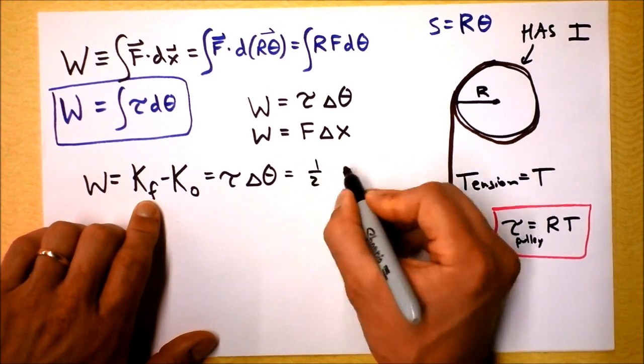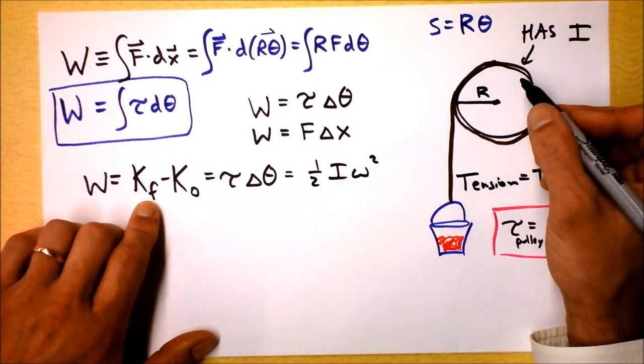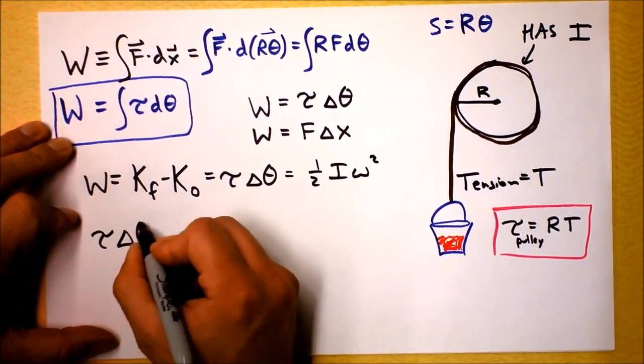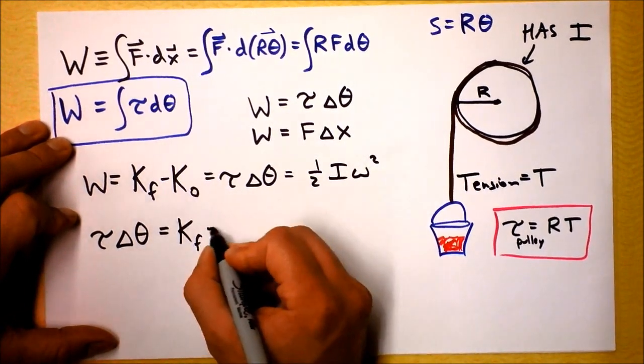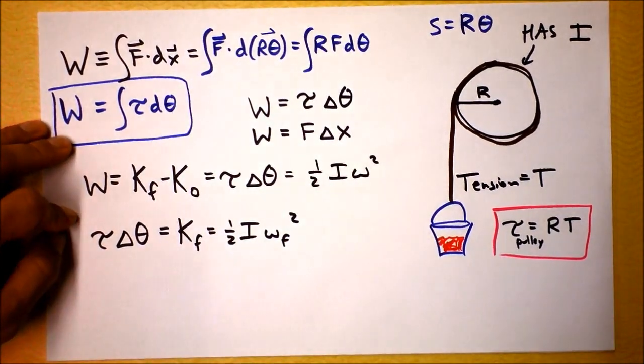If the initial kinetic energy is zero, the final kinetic energy is one-half I omega squared. That's the kinetic energy of the pulley. So we can then write that torque times change in angle is the final kinetic energy, and it is one-half I omega final squared.